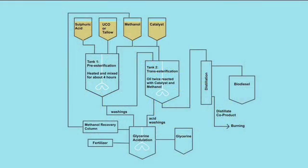When the feedstock comes in, we test it in the lab to gauge the quality of it. This is then put into a tank called the pre-esterification tank where we add two chemicals: sulfuric acid and methanol to kickstart the reaction.